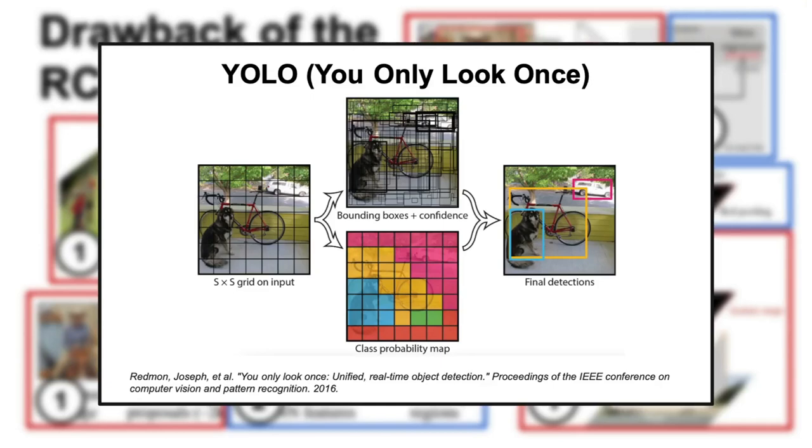This is where the next architecture in the series comes into play. You Only Look Once, or YOLO in short, simplifying the overall pipeline and, as the name suggests, performing object detection in a single step instead of two.